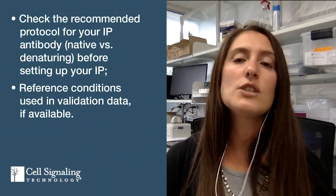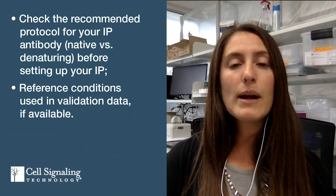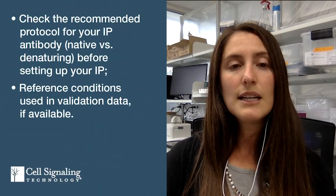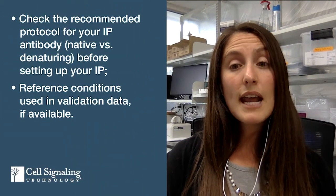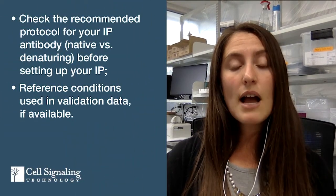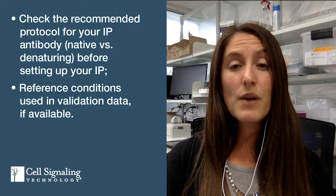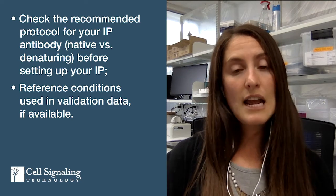But such an antibody may be unable to bind its epitope and capture the protein in native IP. For these cases, an alternate protocol using reducing conditions to partially denature the protein may be beneficial. Before setting up your IP, check for validation data from the antibody supplier and check whether a native or denaturing IP protocol is recommended for that antibody.